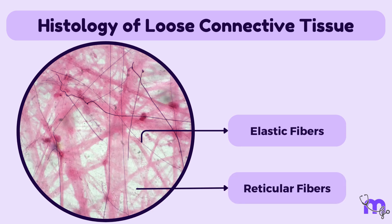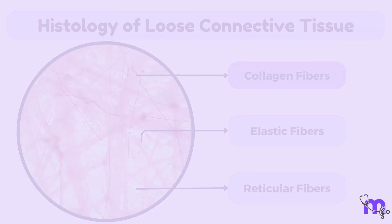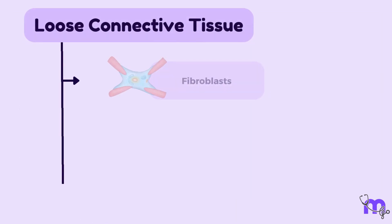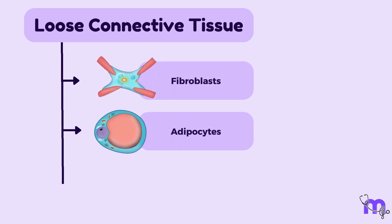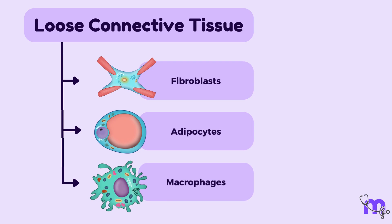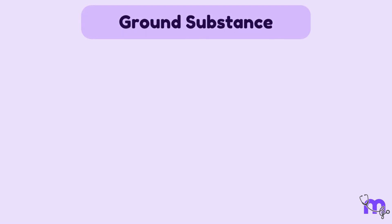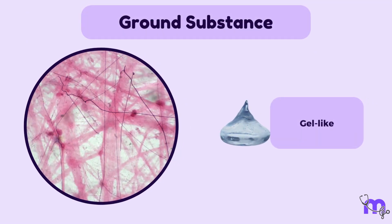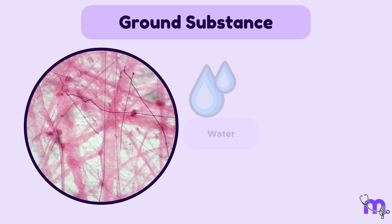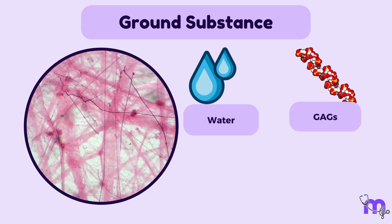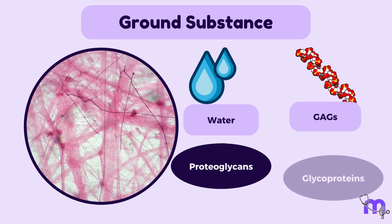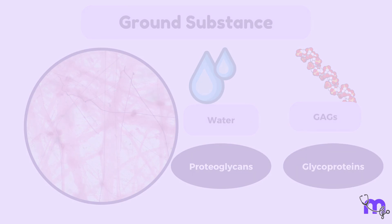The cells in loose connective tissue include fibroblasts, adipocytes and macrophages. Fibroblasts are the most common cell type and they produce the fibres and ground substance that make up the tissue. The ground substance is a gel-like substance that fills the spaces between the fibres and cells. It contains a mixture of water, glycosaminoglycans, proteoglycans and glycoproteins. An example of loose connective tissue in the body is superficial fascia.